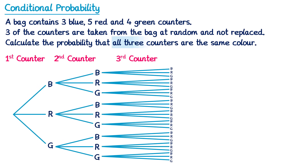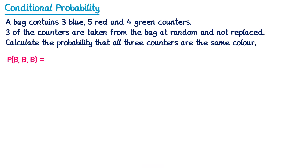There are only three routes where all three counters are the same colour: blue-blue-blue, red-red-red, and green-green-green. So in many conditional probability questions you won't actually use a tree diagram — you just consider the routes that are necessary. The probability of blue-blue-blue: there are three blue and twelve counters in total, so 3 over 12 for the first pick, then 2 over 11 for the second pick, and 1 over 10 for the third pick. Multiply these together: 3 times 2 times 1 is 6, and 12 times 11 times 10 is 1320, giving 6 over 1320.